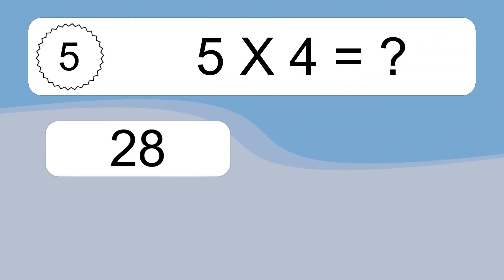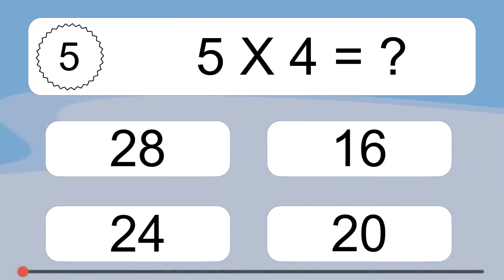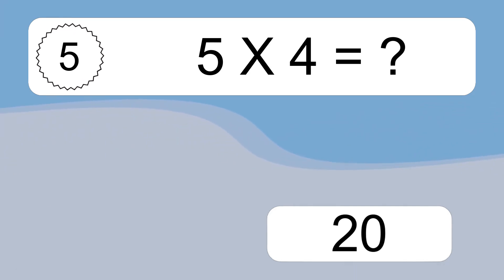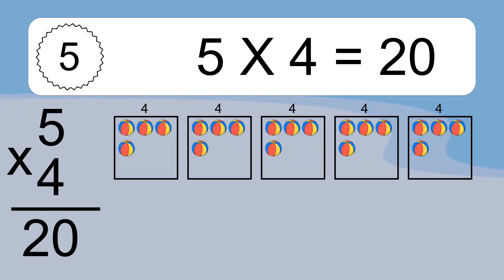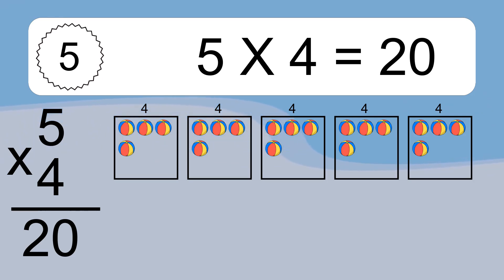5 times 4 equals what? We have 5 boxes, and each box has 4 colorful balls inside. If you count all the balls in all the boxes together, you will have 5 times 4 balls. This equals 20 balls.